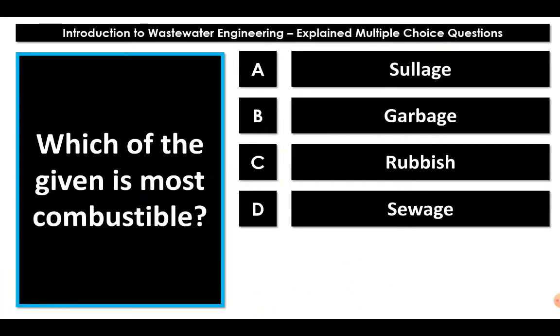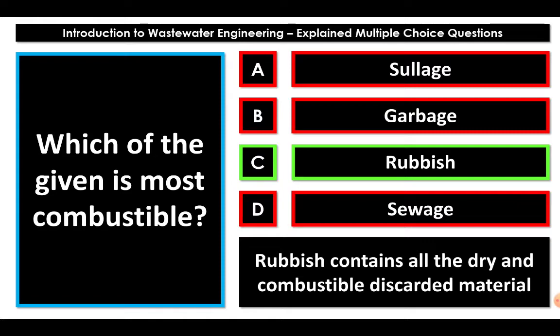Question: which of the given is most combustible — sullage, garbage, rubbish, or sewage? Sullage is waste from bathrooms and kitchen and consists of more than 95% water. Garbage has vegetables and other discarded material, which is high in moisture content. Sewage is nothing but wastewater — moisture content is very high, so it will not be combustible. Rubbish contains all the discarded dry material, which is highly combustible. Therefore, out of the given options, rubbish is the most combustible.